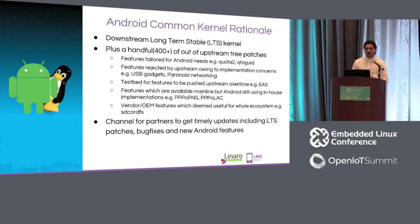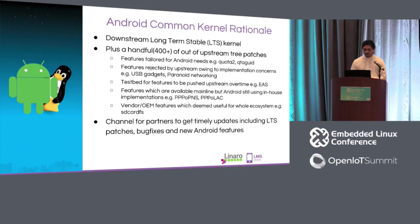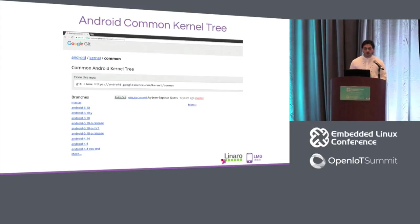There were features implemented at the time because there were no mainline equivalent. For example, these PPP patches — when implemented, there was no equivalent functionality in the upstream kernel. They kept using them and did not switch to upstream implementation until recently. Some features Android Common Kernel carries are more useful from a community point of view, such as patches received from OEM partners — for example, SD card FS. Android Common Kernels act as a channel for downstream OEM partners to get LTS fixes, security fixes, and new Android features.